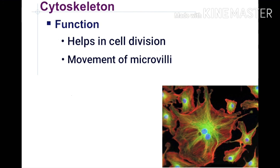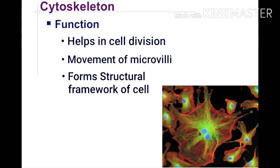The second function is that microfilaments, in association with myosin, form contractile proteins — a contractile machinery which helps in movement. The third function of the cytoskeleton is that it forms the structural framework of the cell — these cytoskeletal structures make a framework of the cell.